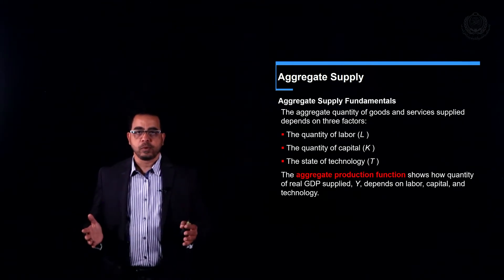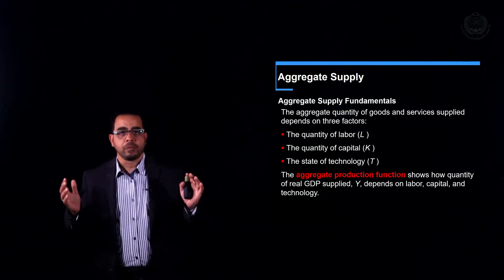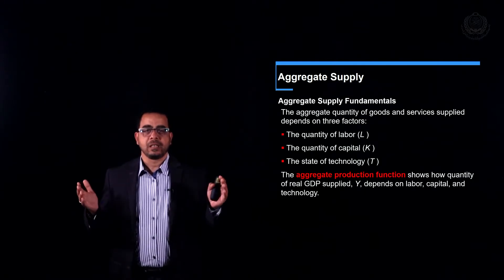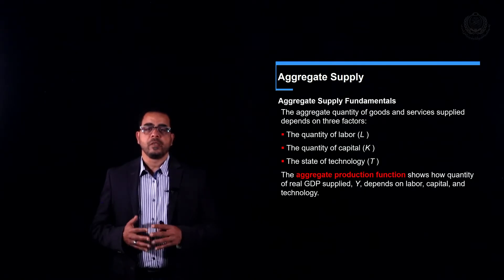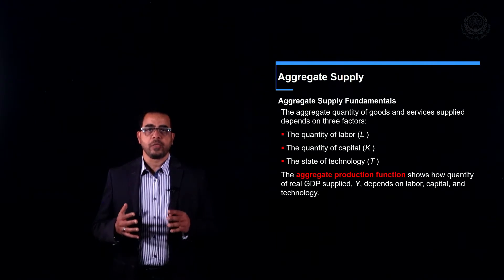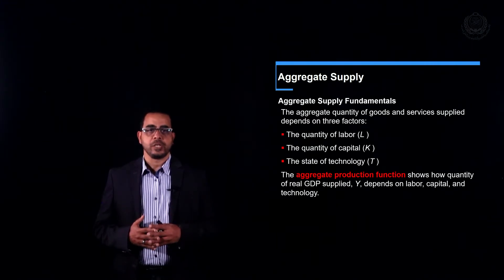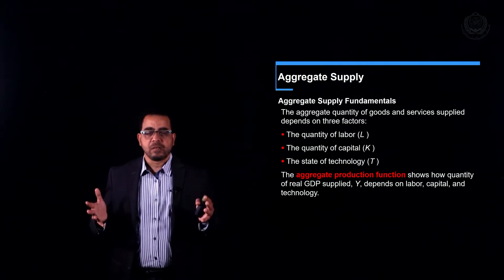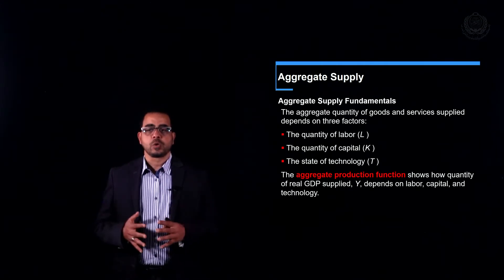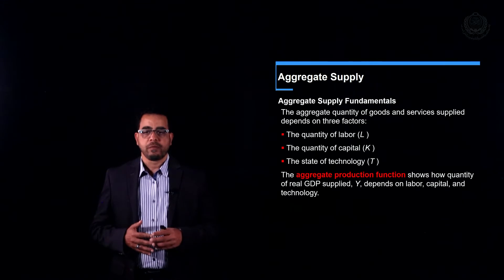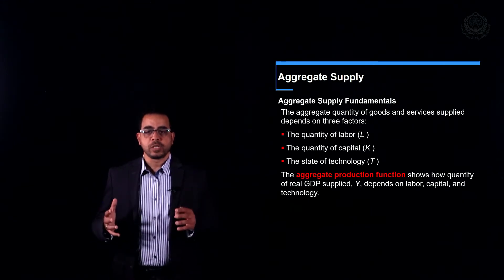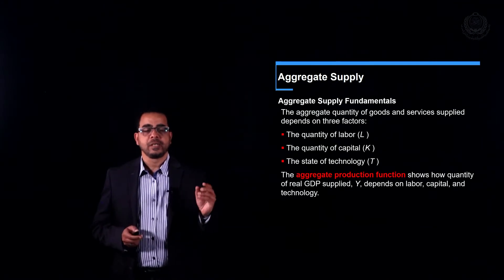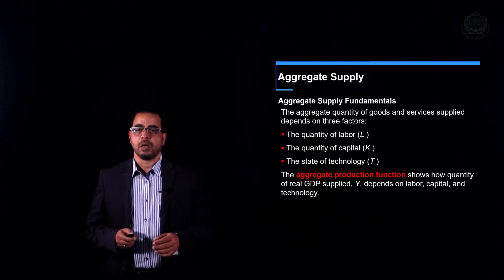The more labor we have, the more capital we acquire, and the higher the state of technology, the higher our production and thus the higher the GDP. What relates those variables to GDP is called the aggregate production function, which shows how the quantity of real GDP supplied depends on the quantity of labor (L), capital (K), and the state of technology (T).